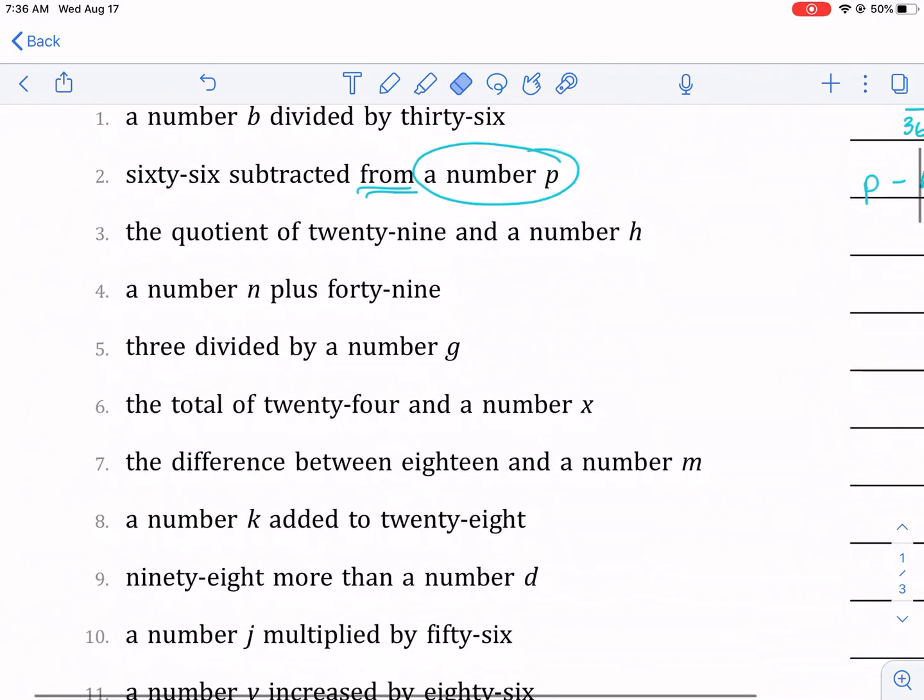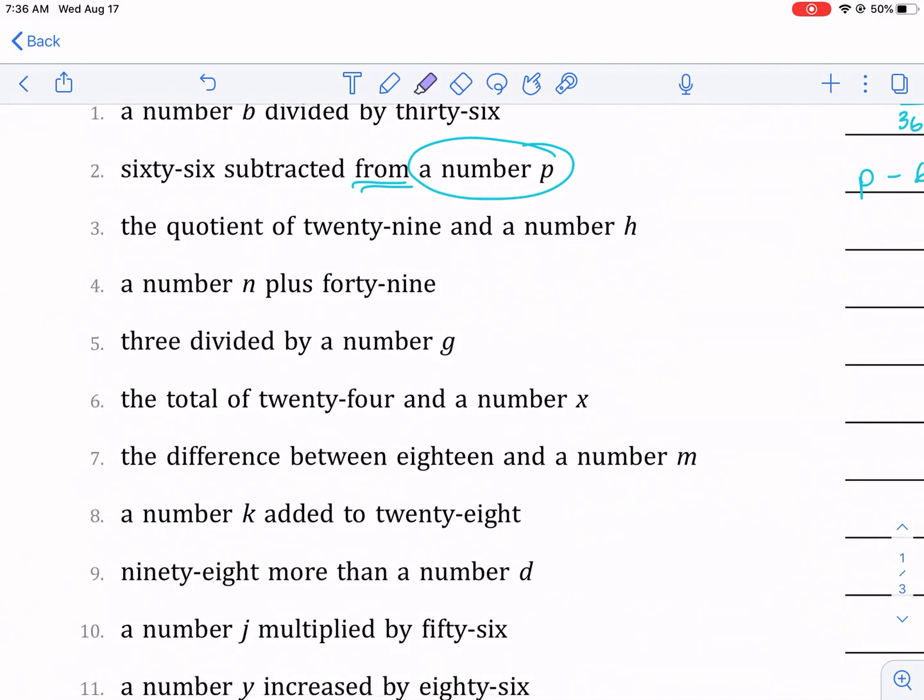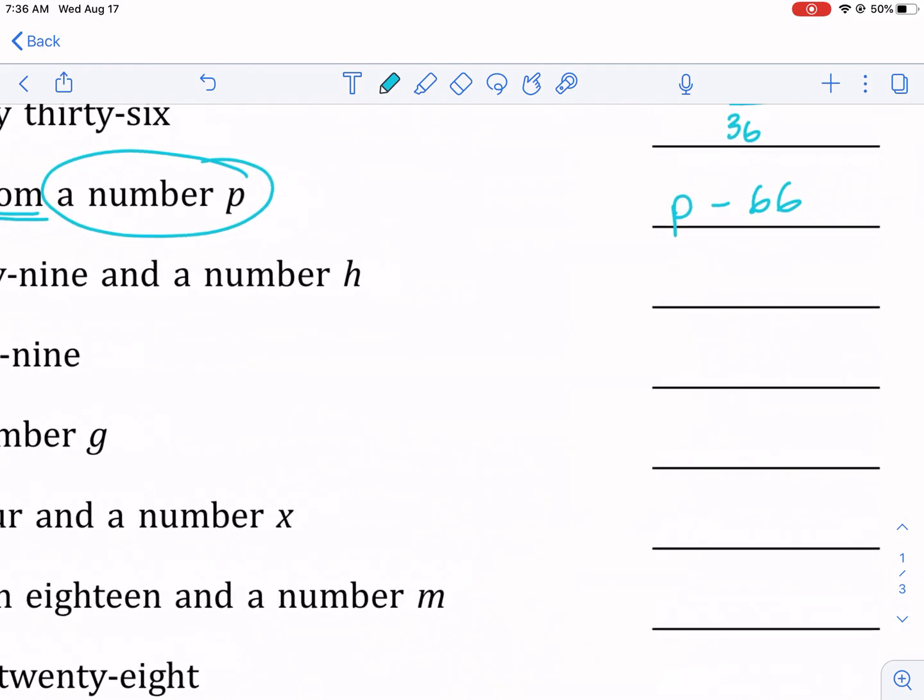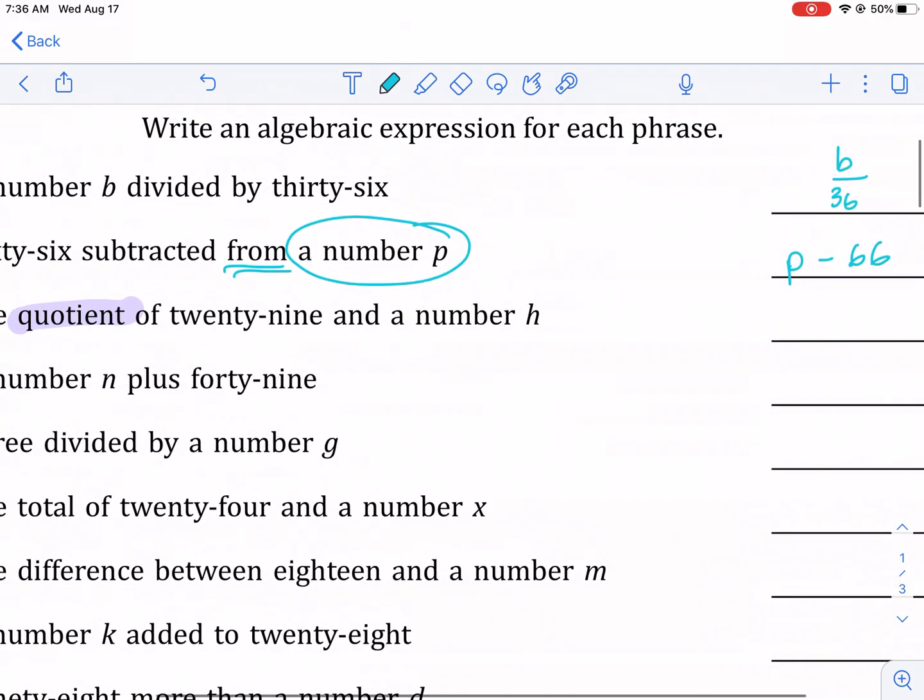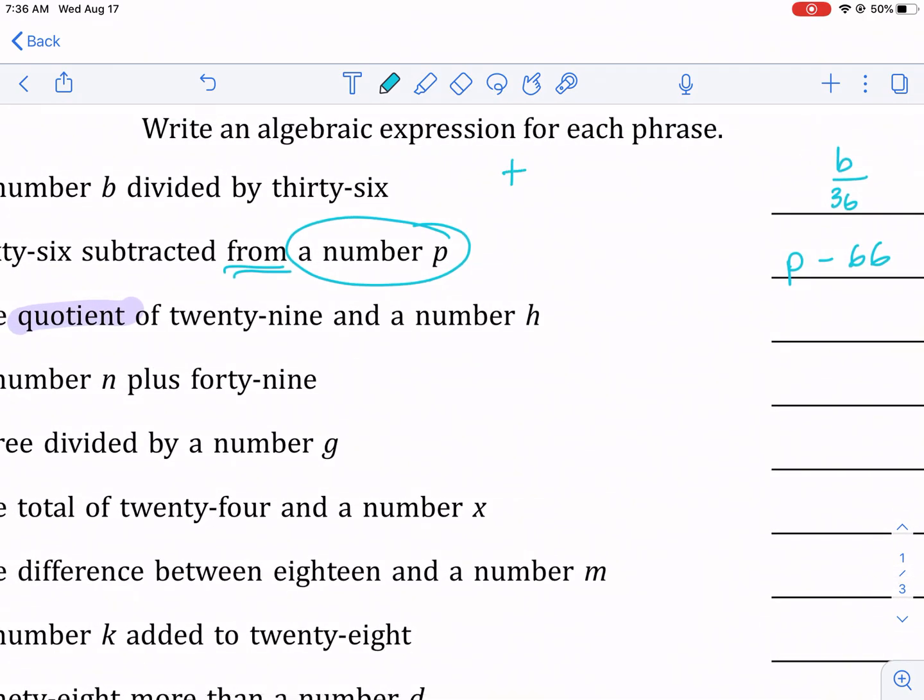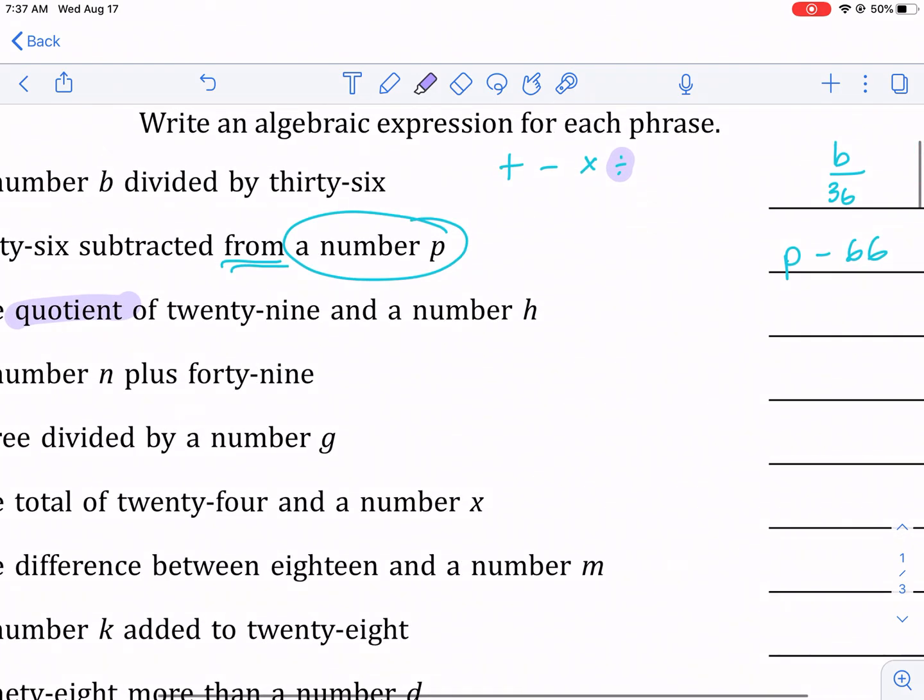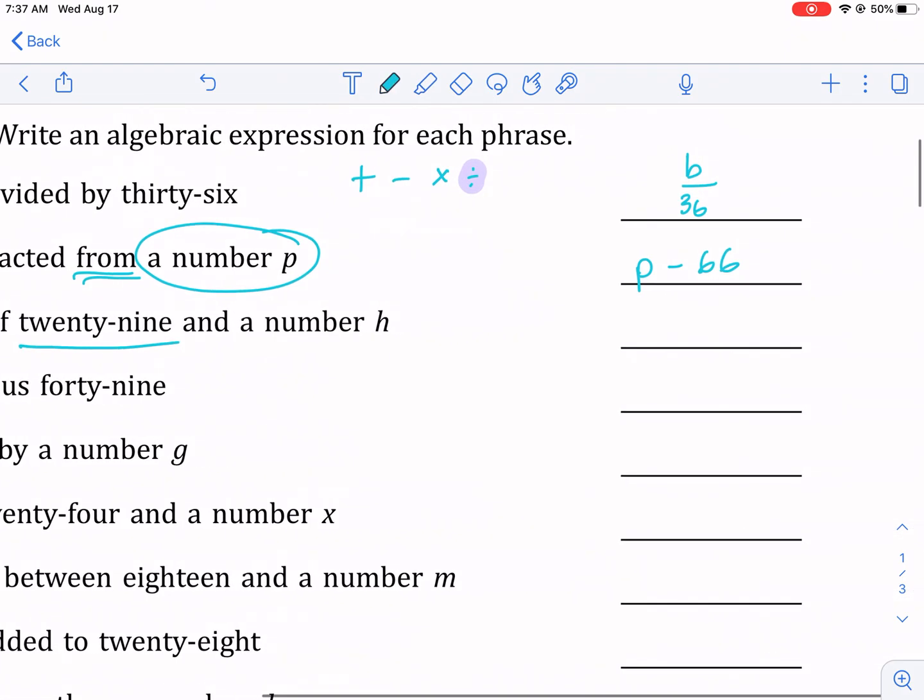Number three: the quotient—here's a new word that we need to know, quotient—of 29 and a number h. Think about our operations: we have plus (addition), subtraction, multiplication, and division. Quotient applies to division, so quotient is division.